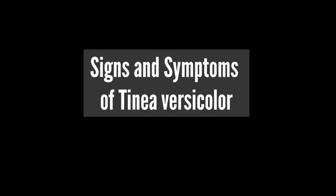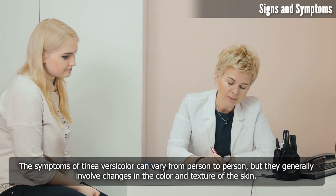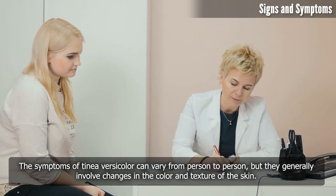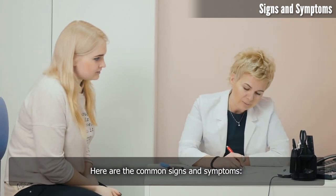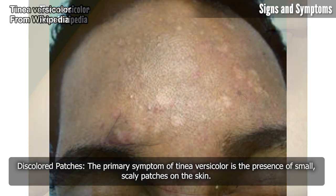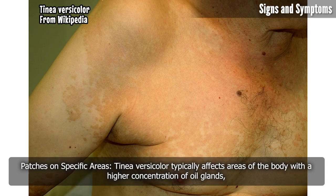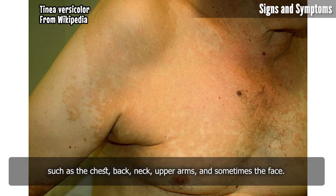The symptoms of tinea versicolor can vary from person to person, but they generally involve changes in the color and texture of the skin. The primary symptom is the presence of small, scaly discolored patches on the skin. Tinea versicolor typically affects areas of the body with a higher concentration of oil glands, such as the chest, back, neck, upper arms, and sometimes the face.